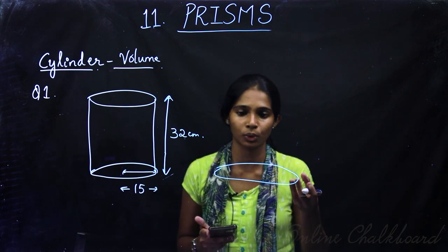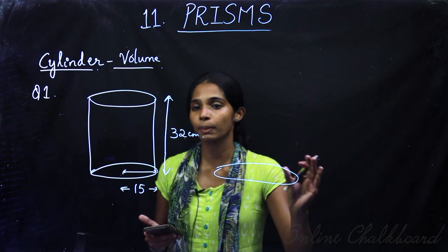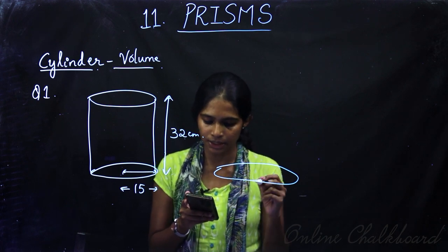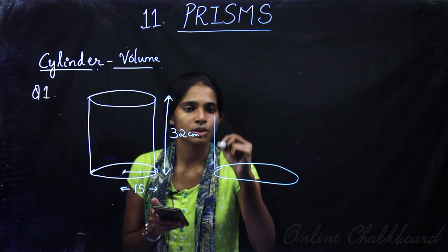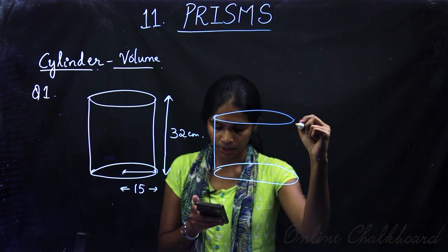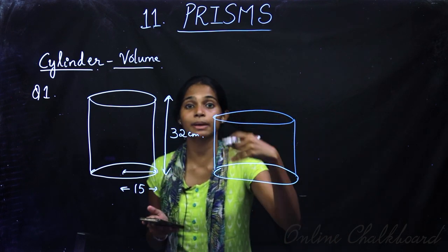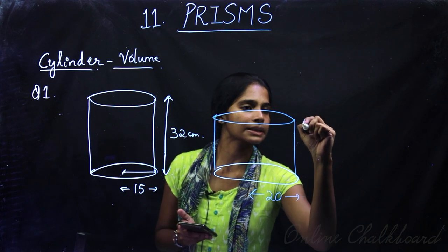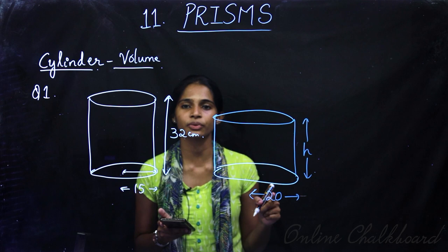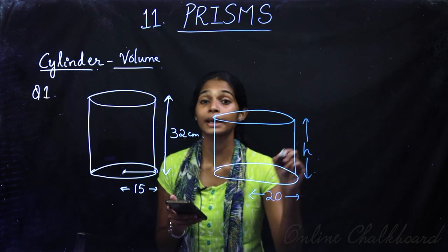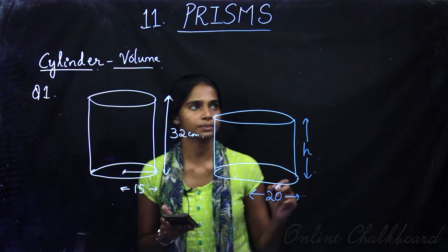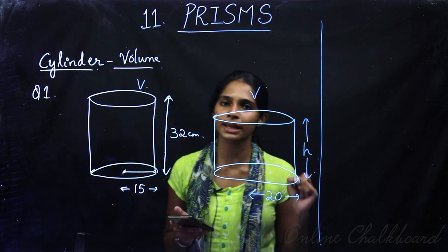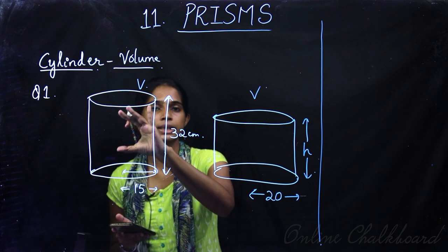We have to use the same volume of iron. The new cylinder has base radius 20 cm. Let the height of the new cylinder be h. We need to find the volume of the first cylinder. Volume of the first cylinder, V1, using the formula πr²h: π into 15 squared into 32, which equals 7200π cm³.